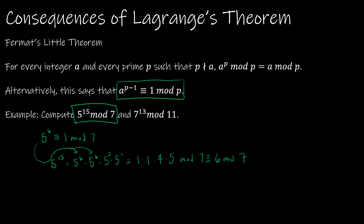Similarly, for 7 to the 13th mod 11: Fermat's Little Theorem tells us 7 to the 10th is congruent to 1 mod 11. So 7 to the 13th equals 7 to the 10th times 7 squared times 7. Since 7 squared = 49 ≡ 5 mod 11, we get 1 × 5 × 7 = 35 mod 11, which is 2 mod 11.